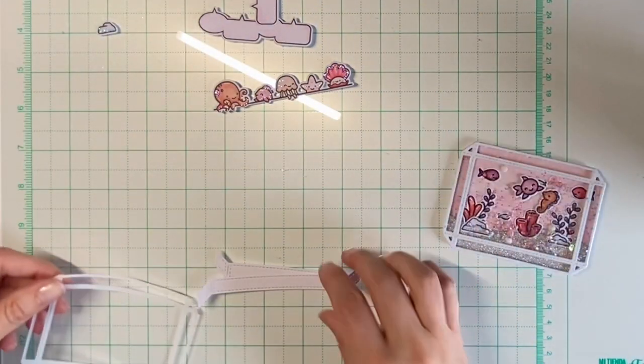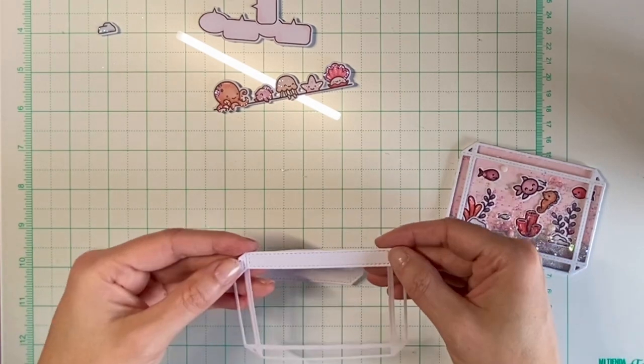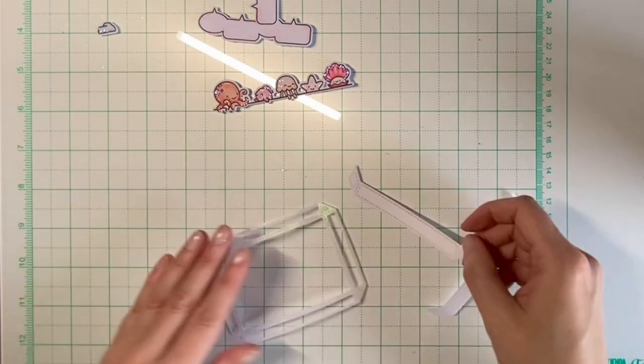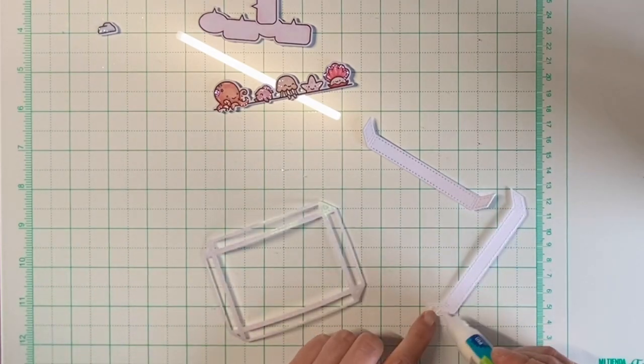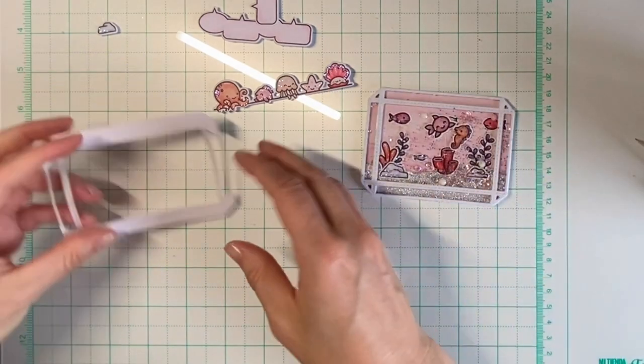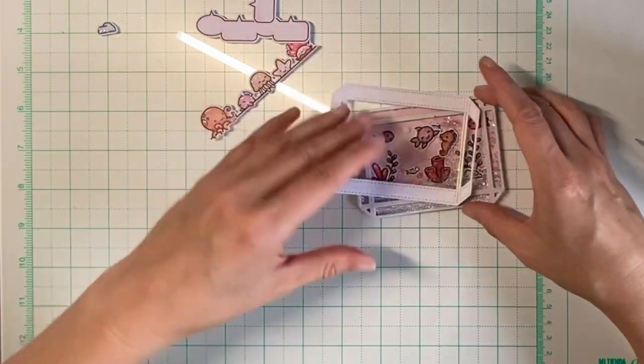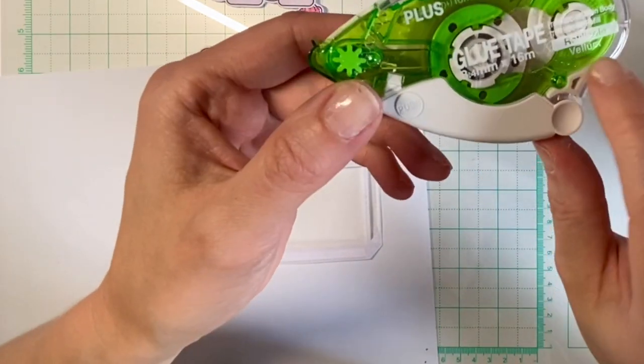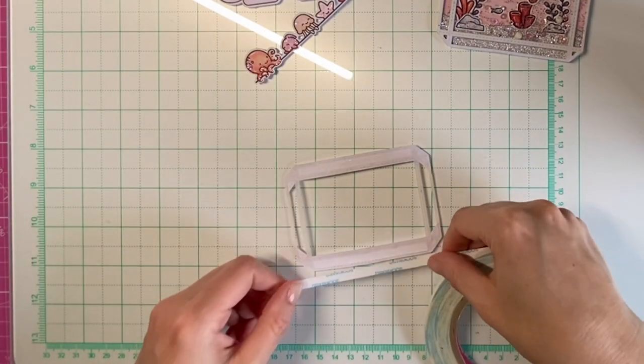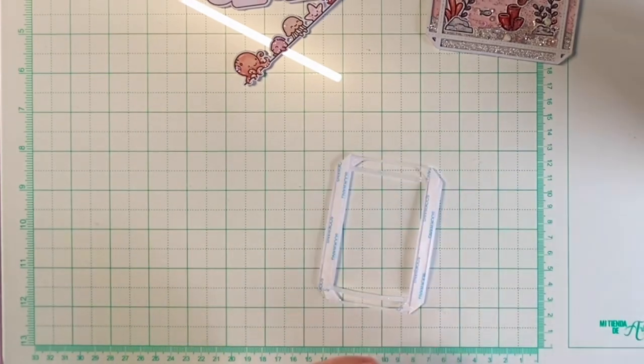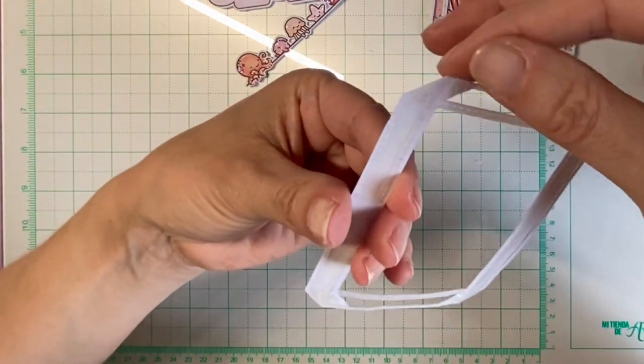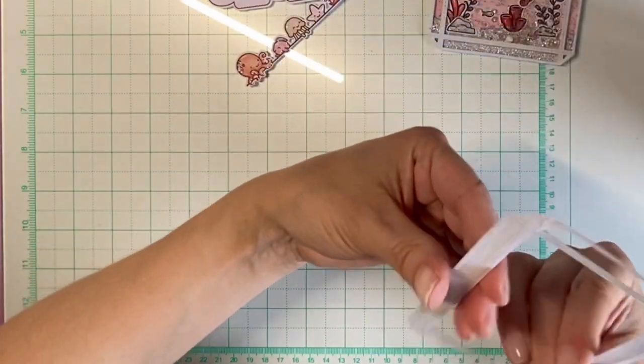Now for our decorative top I cut the frame from pearlescent vellum. To adhere that to the aquarium I decided to first adhere it to the back of the two white pieces, the bottom and the top of the aquarium. I used liquid glue, and to hold these skinny parts in place I decided to use a vellum adhesive. I applied it just to these skinny parts, and for the top and the bottom I used double-sided adhesive. And then adhered the whole piece to my aquarium.